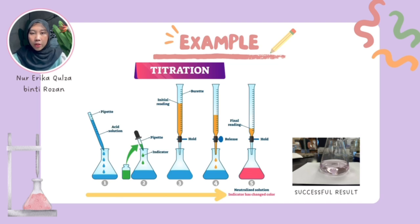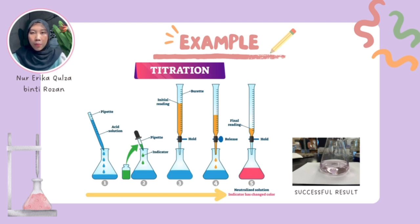First is the preparation of the acid solution. Using a pipette, we measure a known volume of the acid solution and transfer it to an Erlenmeyer flask. The accuracy of the measurement is crucial for the precision of our results. We then add a few drops of an appropriate indicator to the acid solution in the flask. The indicator will help us visually identify the endpoint of the titration by changing color when the reaction is complete.